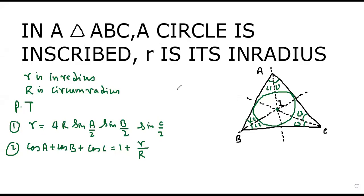Hello friends. In a triangle ABC, if r is the in-radius and R is the circum-radius, then prove: (1) r is equal to 4R·sin(A/2)·sin(B/2)·sin(C/2); (2) cos A + cos B + cos C is equal to 1 + r/R; and (3) [third part stated].